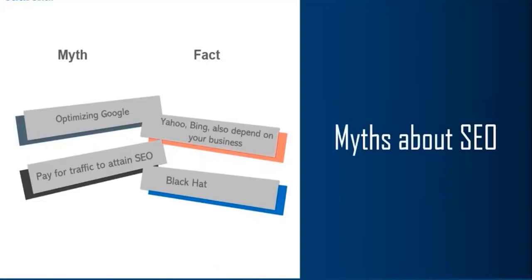Another myth is that once you do your optimization, you don't have to do anything after that. That's not the case because SEO algorithms are constantly evolving. Five years ago, you didn't see local search results first — for example, Google didn't tell you where to buy perfumes nearby. You need to keep yourself updated with the changing logic and ensure that your websites stay updated to changes happening in search engines.